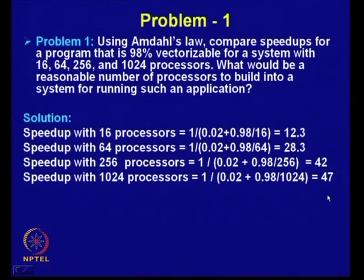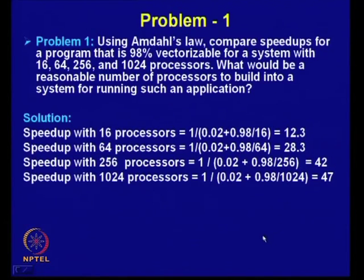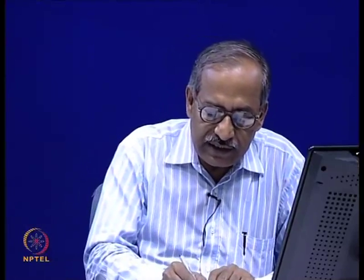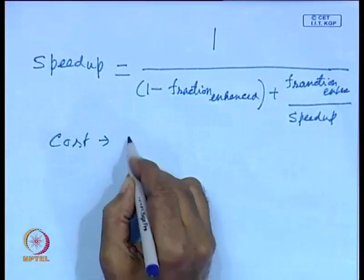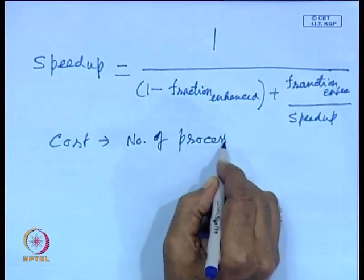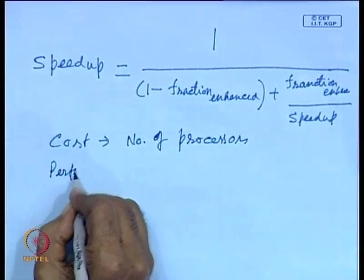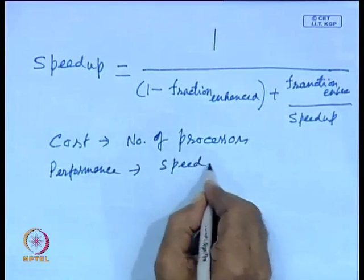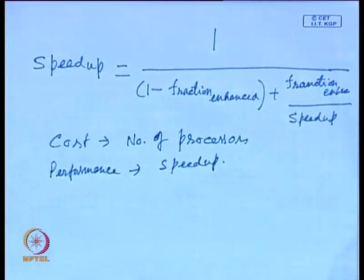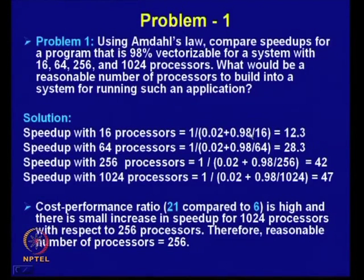As you can see, the cost-performance ratio shows the number of processors utilized is increasing but the speed-up is not increasing at the same rate. Cost in this case represents the number of processors, and performance means the speed-up achieved. For 16 processors: 16/12.3, which is very close to 1. For 64 processors: 64/28.4, a little less than 4. For 256 processors: 256/42, which is close to 6.